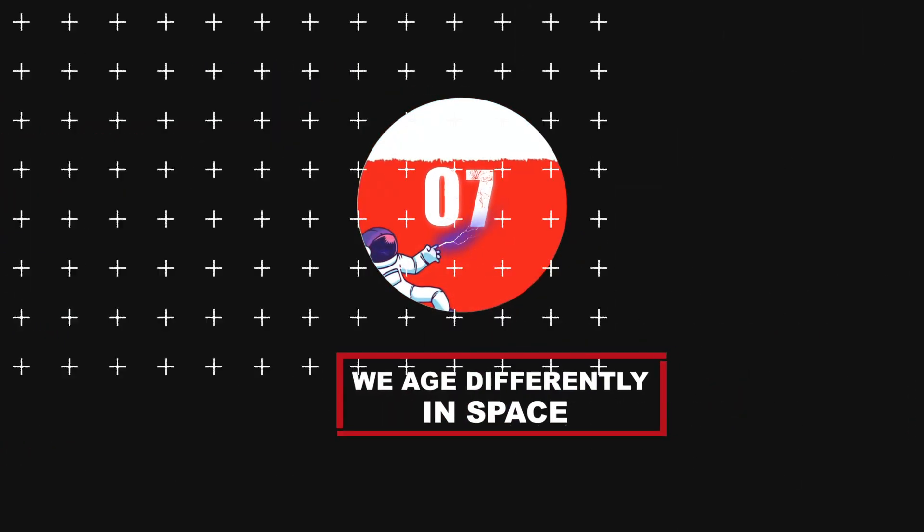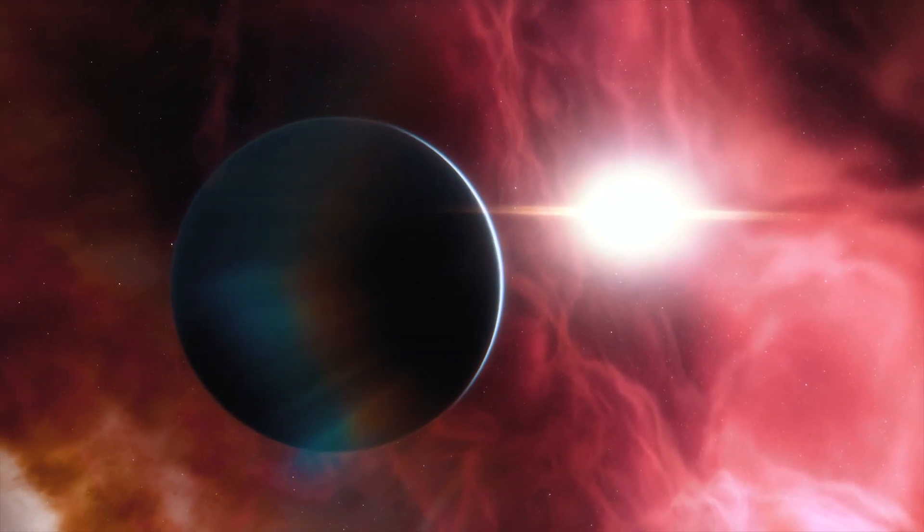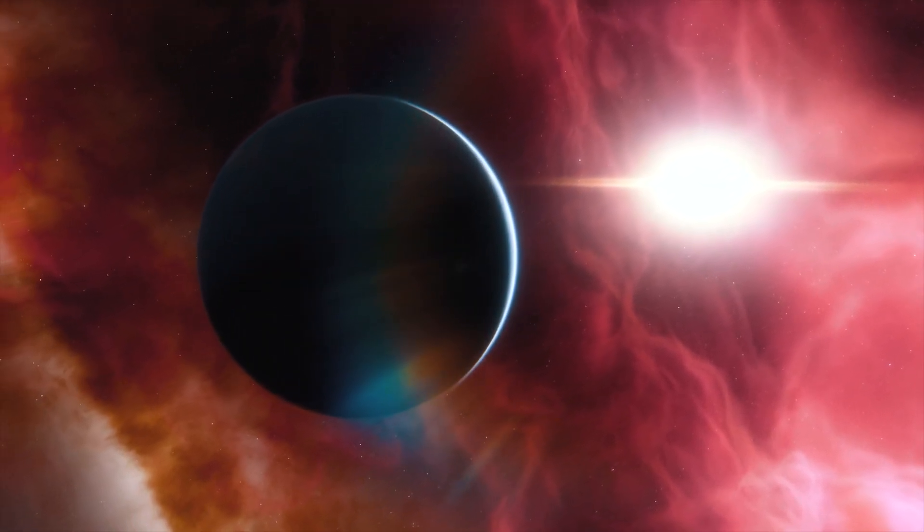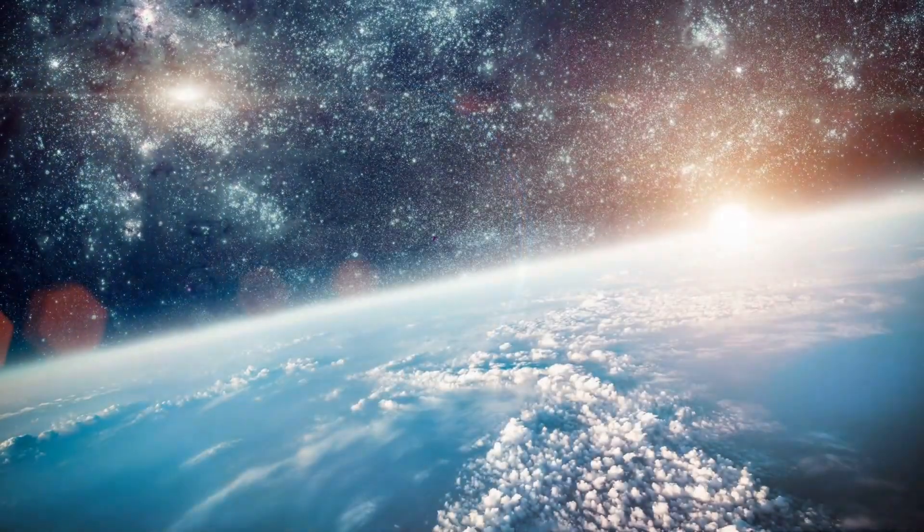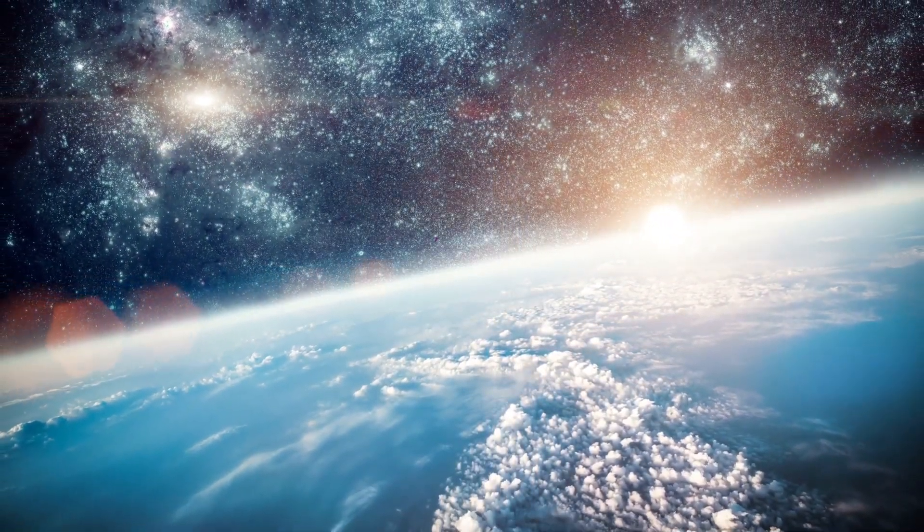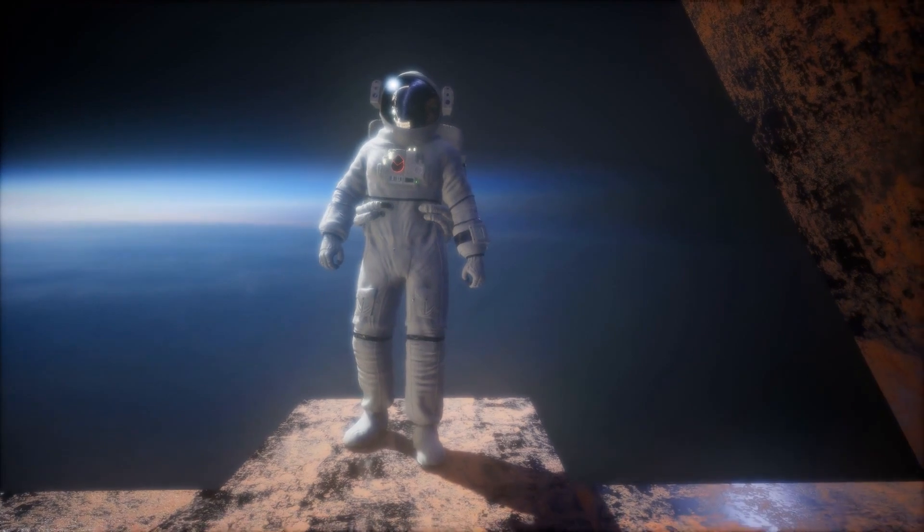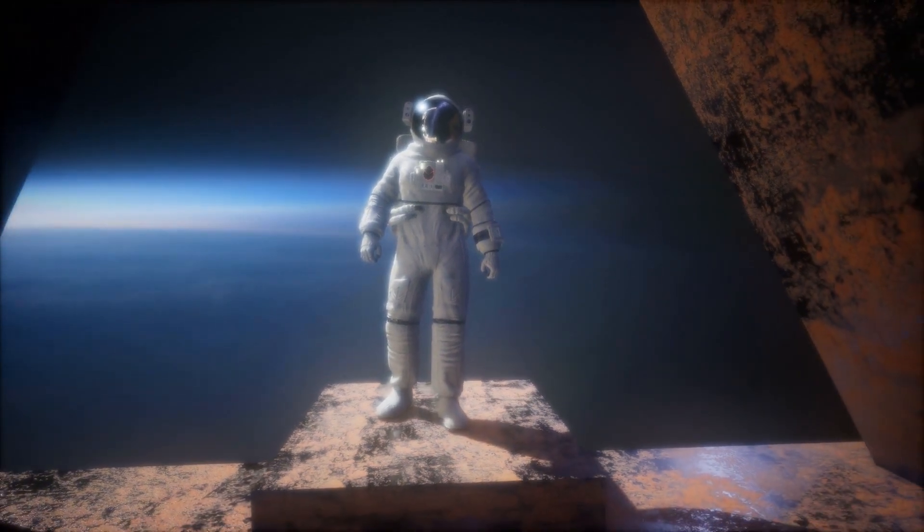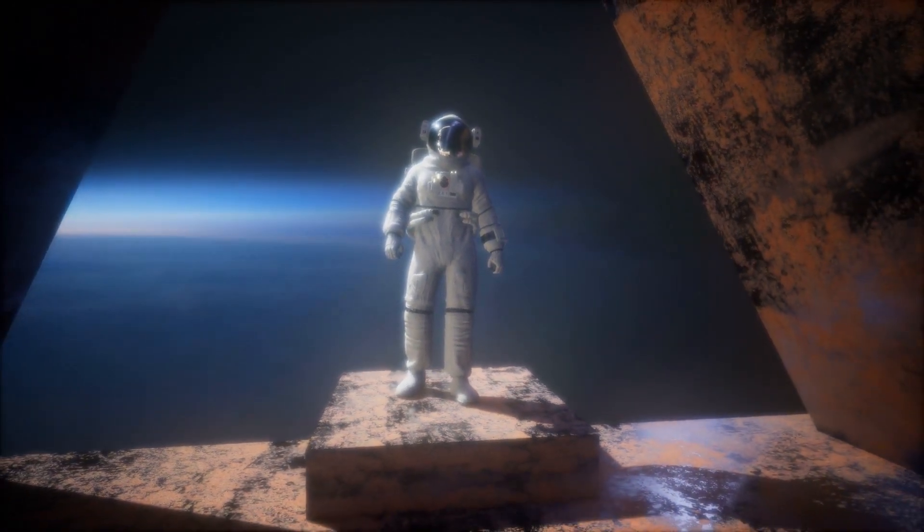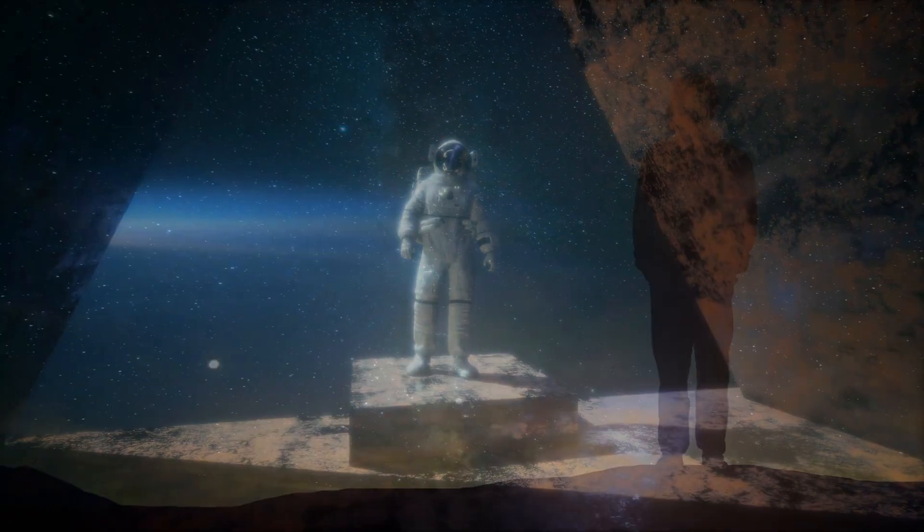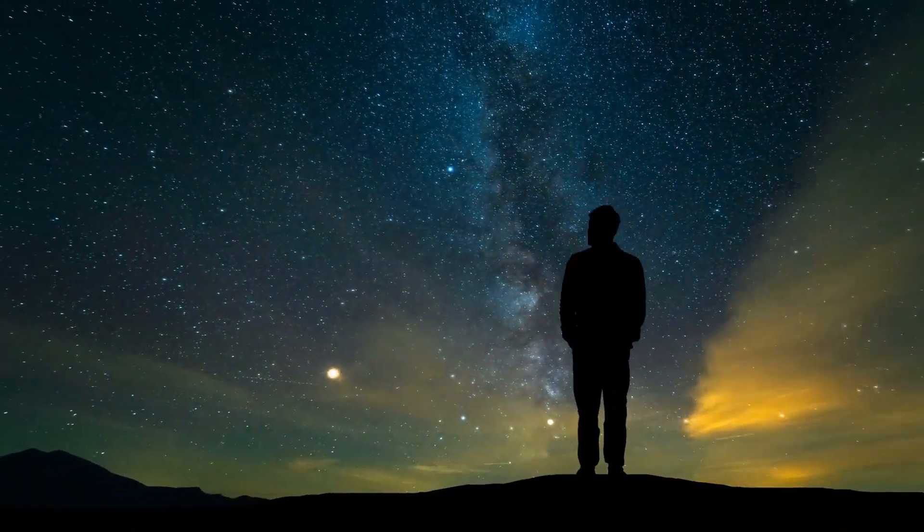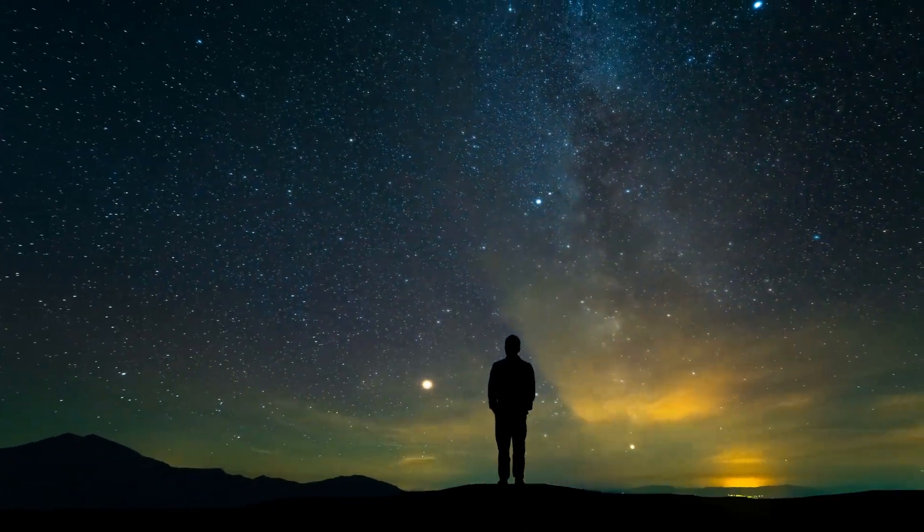Number 7, we age differently in space. On Earth we age based on the orbit of the Earth around the Sun with 365 days in a year. However, in space we don't really follow that routine. While your perception of time might be the same as it was on Earth and most astronauts use Earth-based clocks to keep track of time, the actual physical effects of aging can be much slower in space than on Earth.